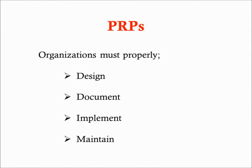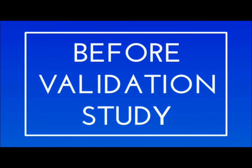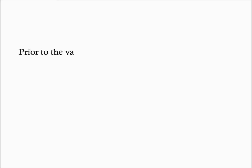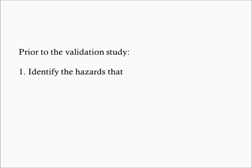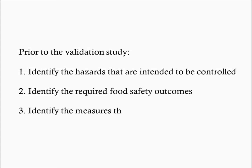Codex identified three tasks that should be performed prior to the validation study. First, identify the hazards that are intended to be controlled. Second, identify the required food safety outcomes. Third, identify the measures that are to be validated.